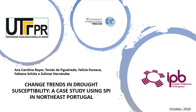Hello, my name is Anna and I'm going to talk about a chapter developed during my Master Thesis in Environmental Technology at IPB, Bragança, Portugal. The name of our presentation is Change Trends in Drought Susceptibility, a case study using SPI in Northeast Portugal.